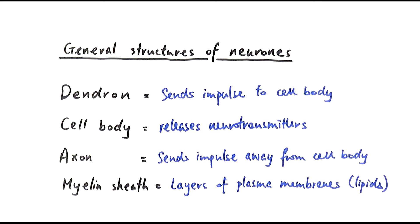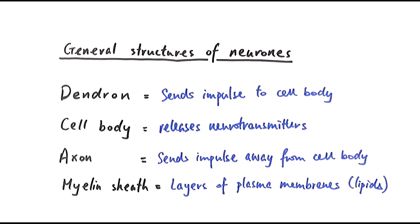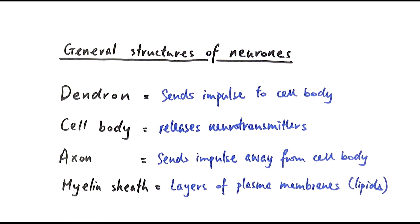Finally, we have the myelin sheath. If a neuron has a myelin sheath around it, we call it a myelinated neuron; otherwise it's non-myelinated, depending on its function. The myelin sheath is a layer of plasma membranes — up to about 100 layers. Some books describe it as a layer of fat or lipids; it's actually made up of glycolipids and cholesterol. Importantly, the myelin sheath acts as an insulation layer that speeds up the rate of nervous transmission. These are the four general structures of neurons.